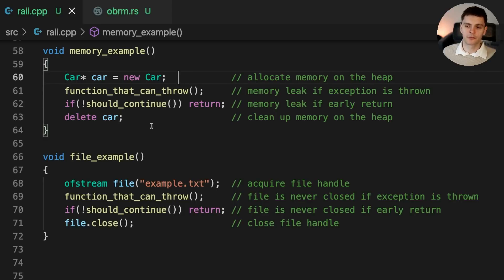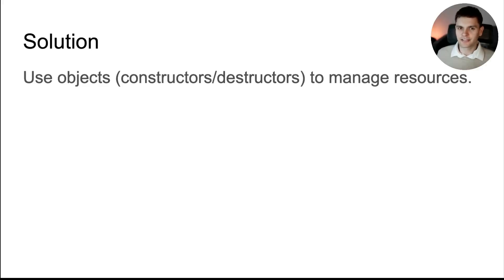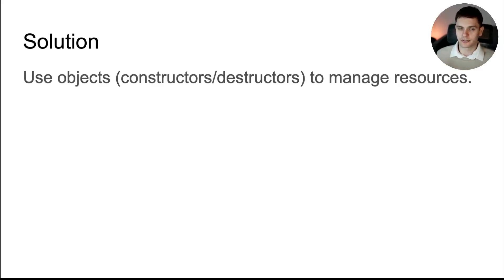On top of that, ownership is ambiguous. For example, imagine that we had multiple pointers to the Car stored on the heap — who's responsible for cleaning it up? To address these problems, RAII was created. The idea being, instead of manually managing resources, let objects — specifically the constructors and destructors of objects — manage resources.